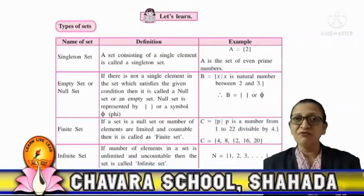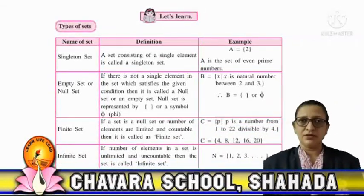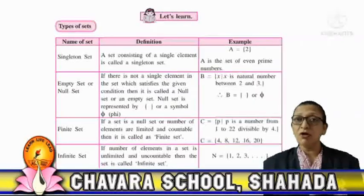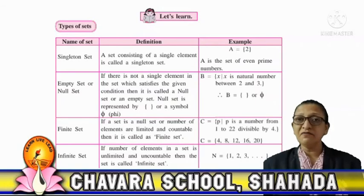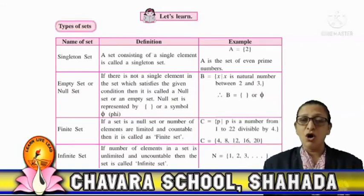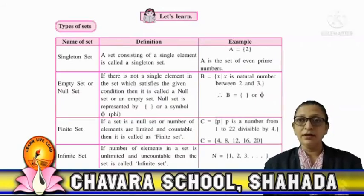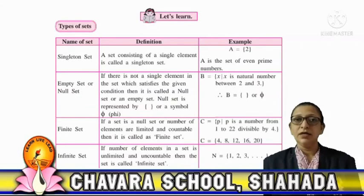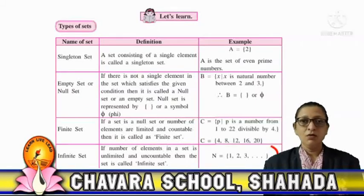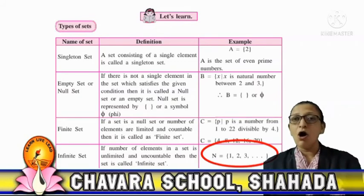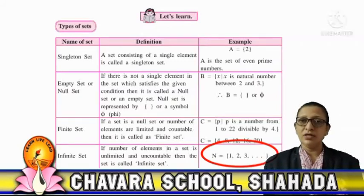Next is infinite set: if the number of elements in any set are infinite or uncountable, then the set is called an infinite set. For example, the set of all natural numbers.